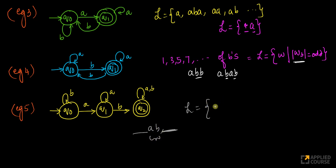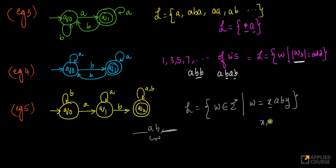The language accepted by this is basically words w which belong to sigma star such that w equals some x followed by 'ab' followed by y, where x and y are also strings which can be of zero length or more. In other words, the language is all words that contain 'ab' as a substring.